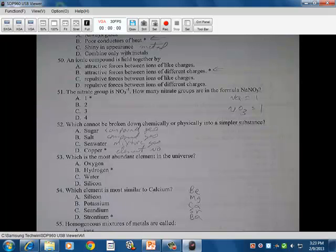Which cannot be broken down chemically or physically into a simpler substance? Sugar is a compound and can be broken down. Salt is a compound and then could be broken down into something simpler. Common salt is sodium chloride. You could break it down into sodium and chloride if you wanted to. Sea water is a mixture. Therefore, it could be broken down. You could take the salts out of the sea water. And then the water itself could be broken down. Copper could not be. It is an element. It cannot be chemically or physically made any simpler than copper.